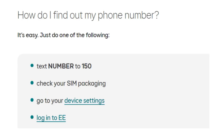Text your number to 150, then check your SIM packaging. Now go to your device settings, then login to EE. Once you log into EE, you will be able to check your SIM number. That's basically how you can check your EE SIM number.